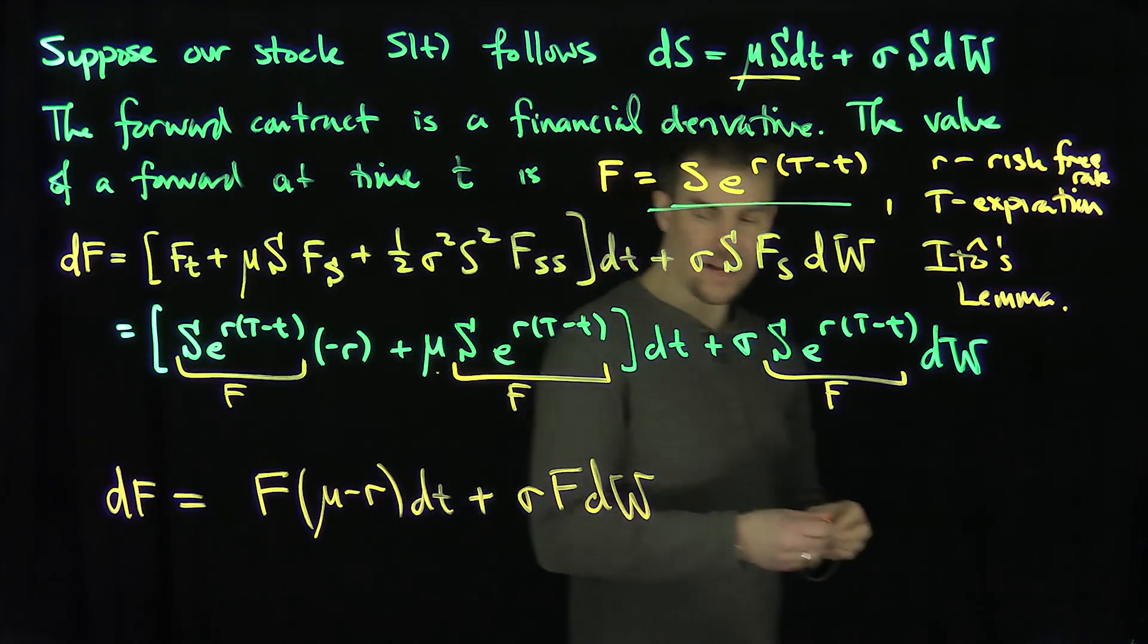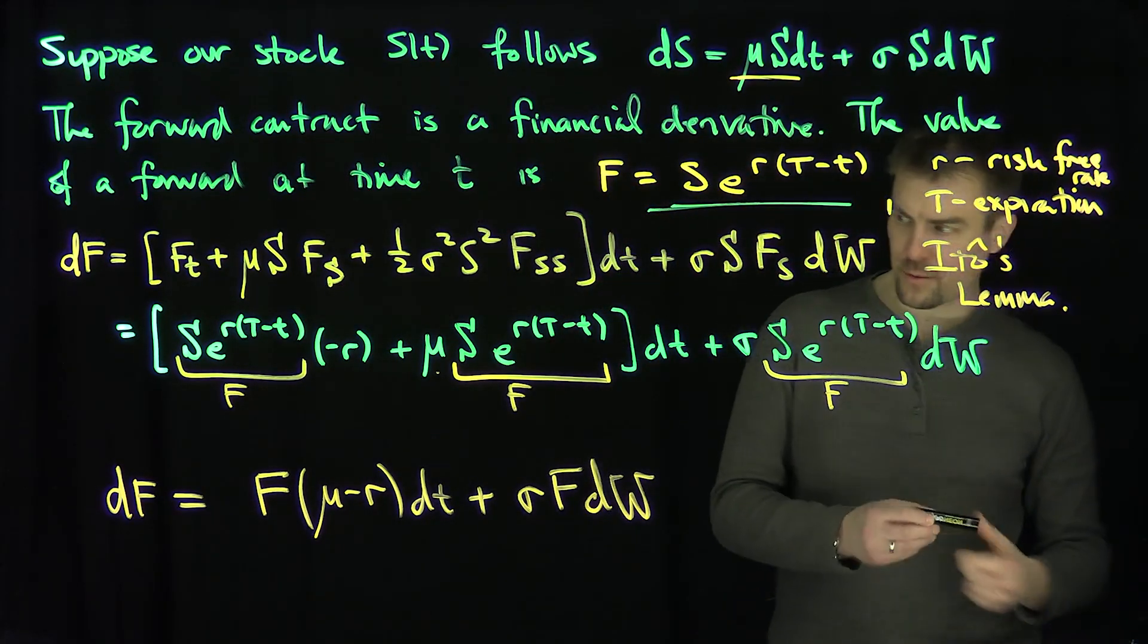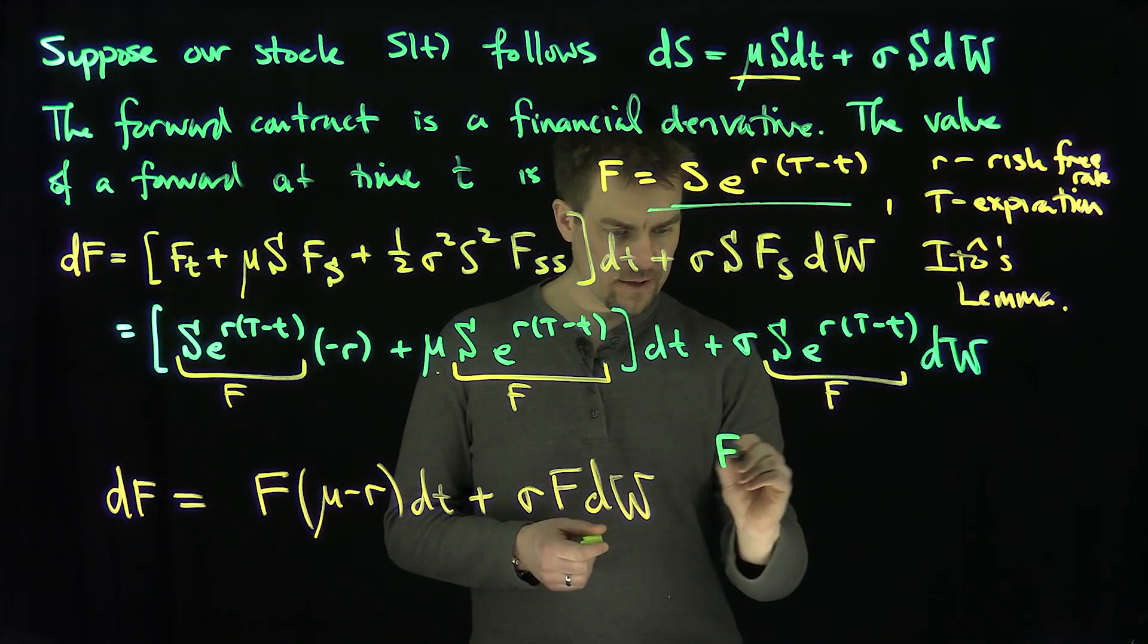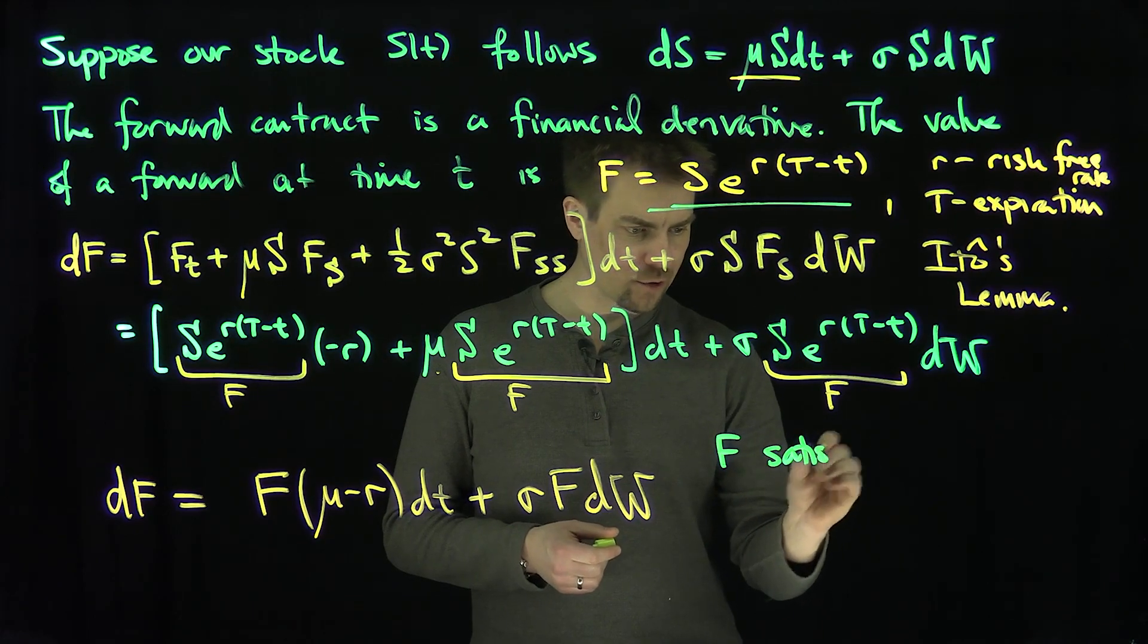So what this says is that F is log-normally distributed, or F satisfies geometric Brownian motion.